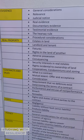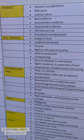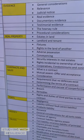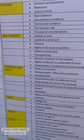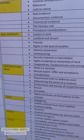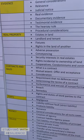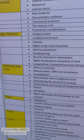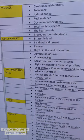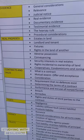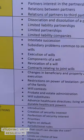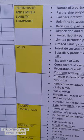Basically, this table is a breakdown of each topic. For example, for Evidence: general considerations, relevance, and judicial notice are grouped for one day. Then real evidence and documentary evidence on another day, testimonial evidence on another day, the hearsay rule on another day, and procedural considerations on another day. I can just go in, pick a topic from Evidence, then pick a topic from Wills or Partnership.